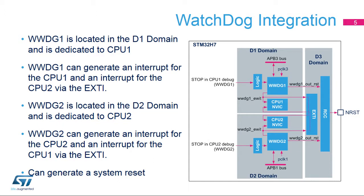The STM32H7 includes two window watchdogs, WWDG1 and WWDG2. WWDG1 is dedicated to CPU1 usage and WWDG2 is dedicated to CPU2 usage. WWDG1 is connected to the APB3 bus of the D1 domain, and WWDG2 is connected to the APB1 bus of the D2 domain. The WWDG1 early interrupt output is connected to the NVIC of CPU1, but also to the EXTI in order to wake up and interrupt CPU2 if the application requires such a feature.